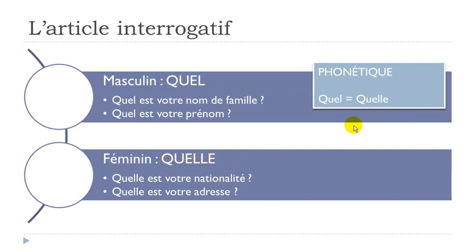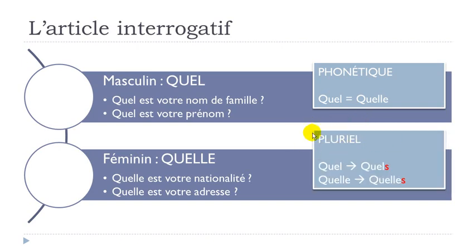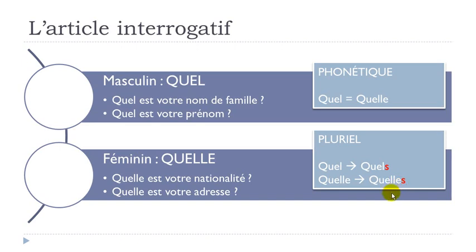The second thing to remember is that you must agree these articles with the word they are connected to. So if the word is in the plural form, you will have to use the plural form. The rule in French — as from previous lessons — is to add a final S to make the plural. So QUEL, masculine singular, becomes QUELS, masculine plural. And QUELLE, feminine singular, becomes QUELLES, feminine plural. The good news is that you pronounce them all the same way.